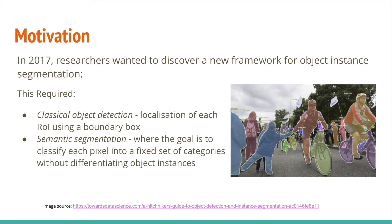In 2017, researchers from Facebook AI Research wanted to discover a new framework for object instance segmentation, which allows detecting all objects in an image and marks all pixels belonging to each object. This requires classical object detection, localization of each region of interest using a bounding box, and semantic segmentation, where the goal is to classify each pixel into a fixed set of categories without differentiating object instances.